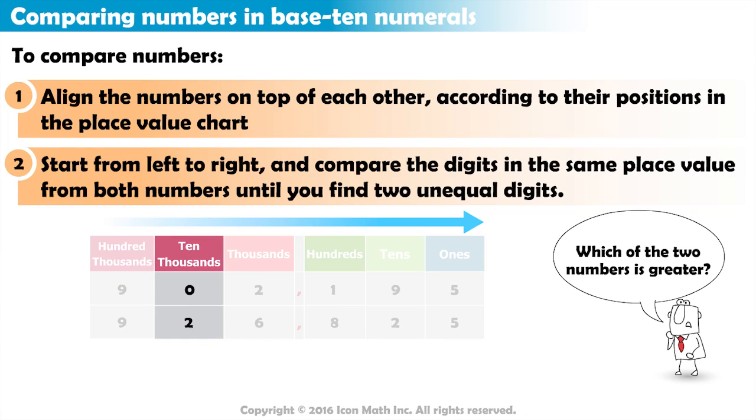Here we have the digit 0 in the first number, and the digit 2 in the second number. The two digits are unequal, so we stop here.